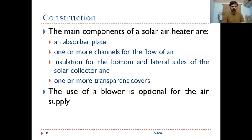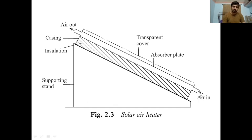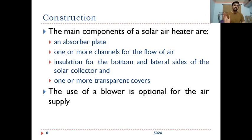The main components of a solar air heater are an absorber plate, one or more channels — the previous diagram showed a single channel air heater — insulation, and one or more transparent covers. When air flows from the bottom, gets heated, and goes out through the top, this is natural convection — no blower or fan, no forced convection is employed. If you want to flow air forcibly, you may have to use a blower.